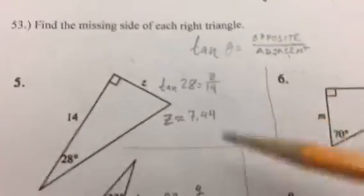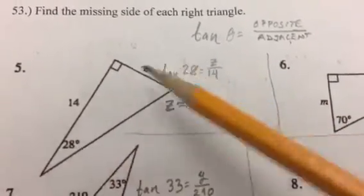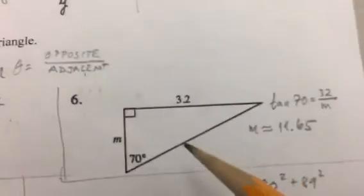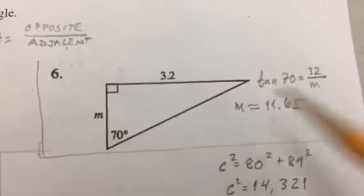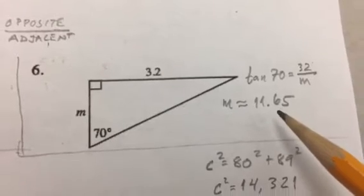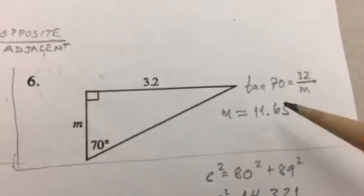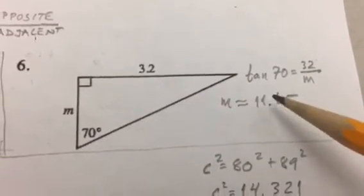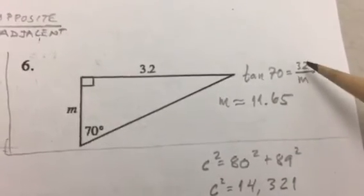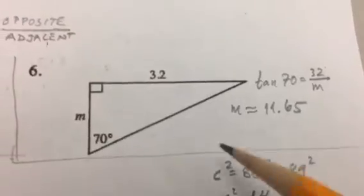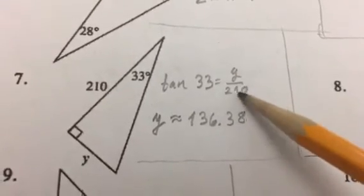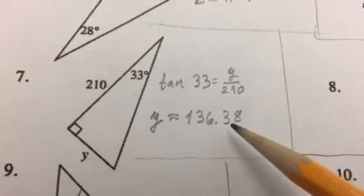Going down here, this other set of problems to wrap things up. Here's another tangent problem: tangent of 28 is z over 14, and it gives you about 7.44 for z when you do this right. Number six here, tangent of 70 is 3.2 over m, so that's 11.65 for this side right here. Oh, you know what, that's wrong—I put 32 in my calculator, not 3.2. So check that answer there, that one's probably not going to be right. It's tangent of 70 equals 3.2 over m, not 32.